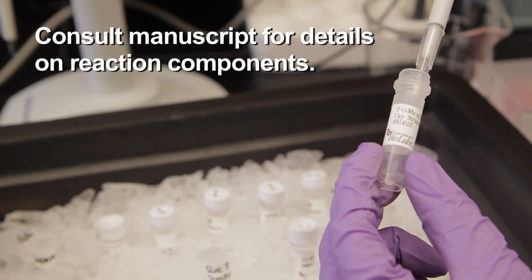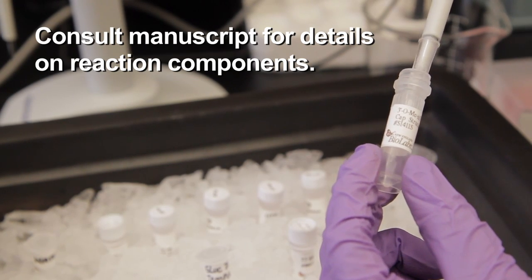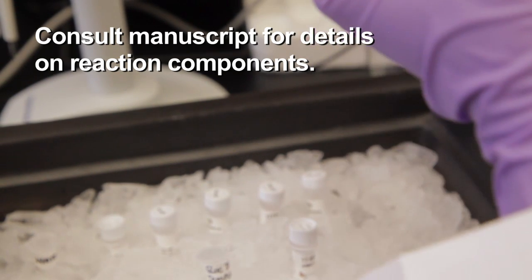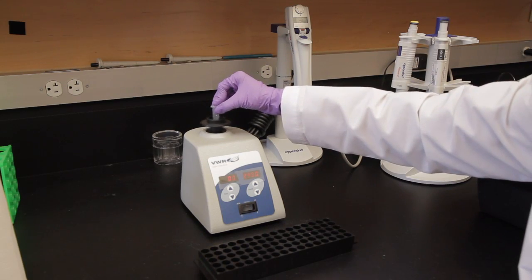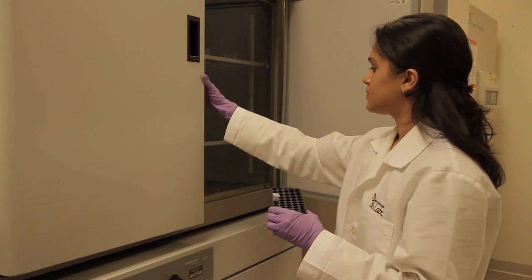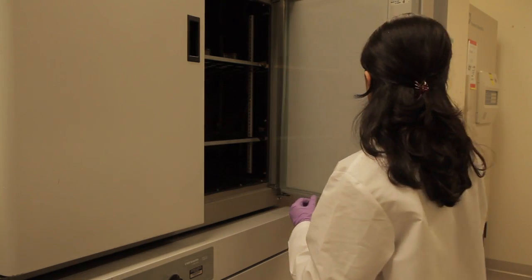To synthesize capped RNA using a cap analog, make a similar reaction mixture, but add the cap analog nucleotides after adding the standard nucleotides. Mix the reaction components by gently vortexing. Then pulse spin and incubate the reactions at 37 degrees Celsius for 2 hours in a dry air incubator.